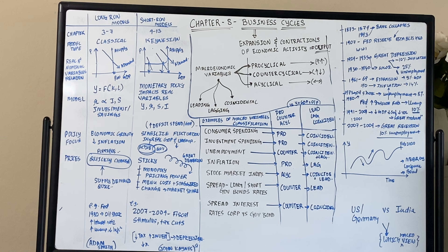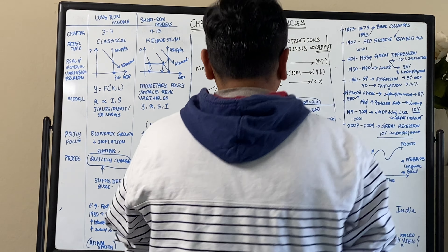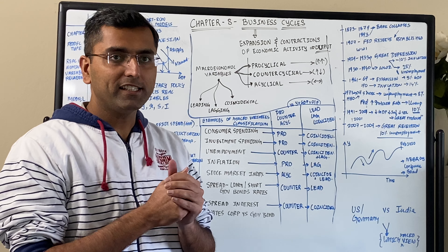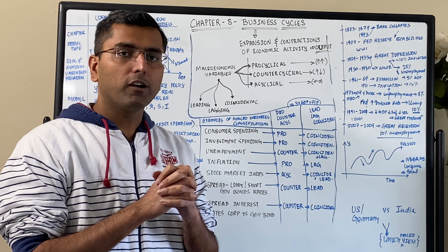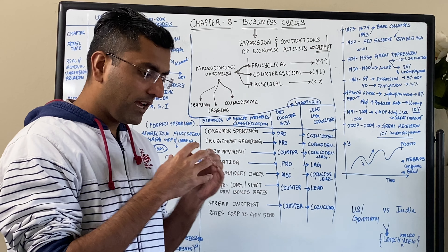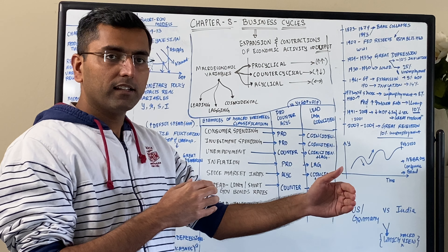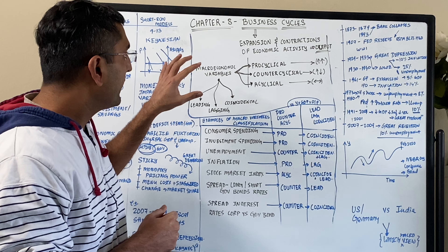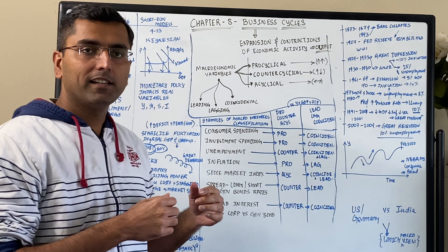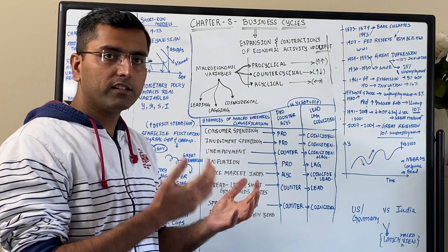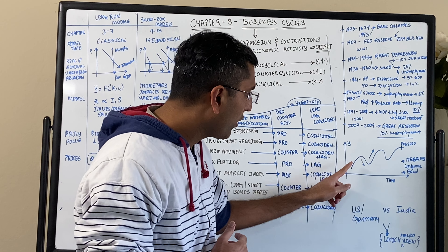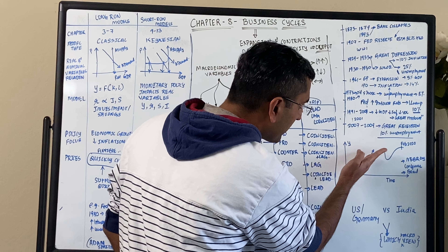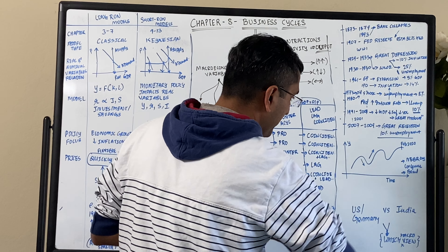Chapter eight: business cycles. This is a super interesting chapter. So far in the first seven chapters we have seen the classical model, or classical way of looking at macroeconomics. This chapter is the bridge chapter, after which we will see the Keynesian model. It's called business cycles because every business or every country goes through these cycles of expansion and contraction, but overall it keeps going up.